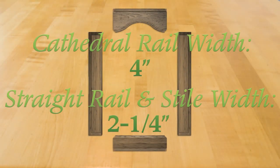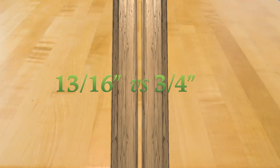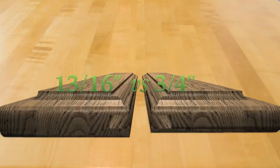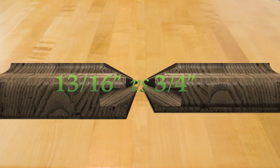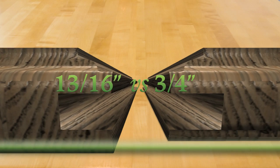The finished width of our straight rail and stiles are 2 1/4 inches, and our cathedral rail is 4 inches. But you can make them narrower if you prefer. Instead of using 3/4 inch thick stock, I prefer 13/16ths thick stock. This extra 1/16 inch means the rear tongue of the frame will be 50% thicker and stronger.